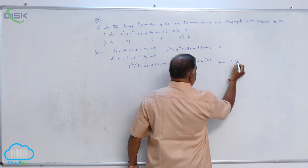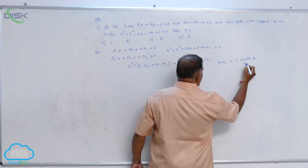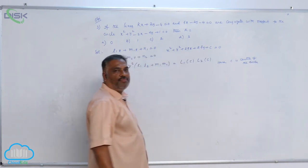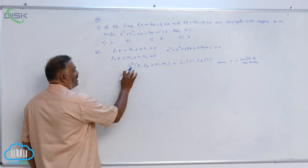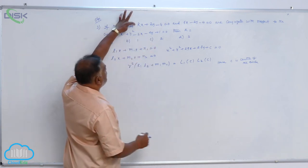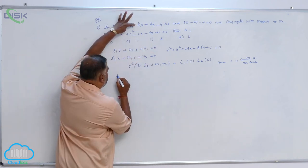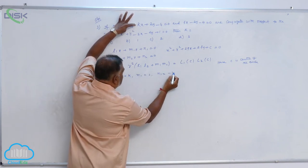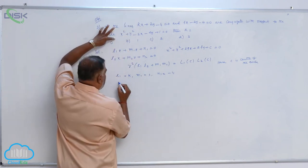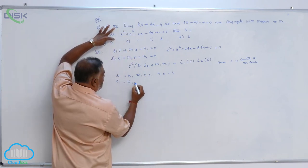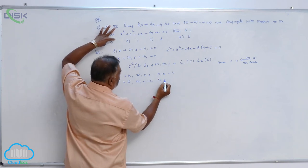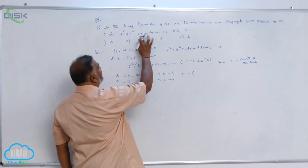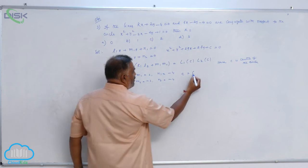Here, c is center of the circle. Now you have to substitute in both the lines. Let us see one by one. You observe that l1 equals k, m1 equals 2, n1 equals minus 4, then comes l2 equals 5, m2 equals minus 2, n2 equals minus 4. Next, center is equal to, you can get center from the circle equation, 1 comma 1.